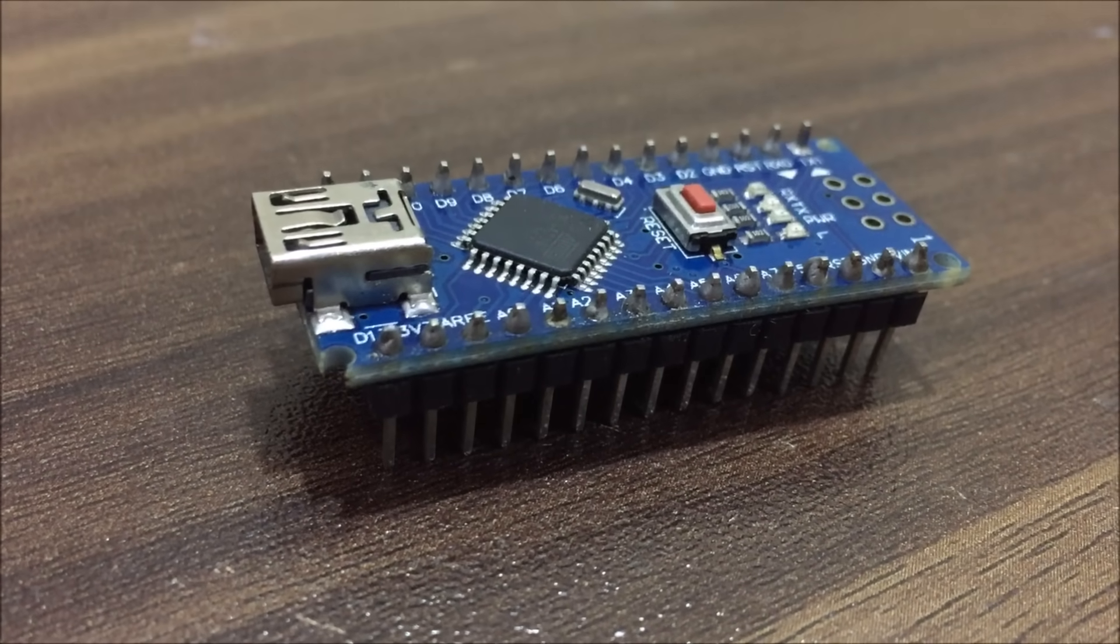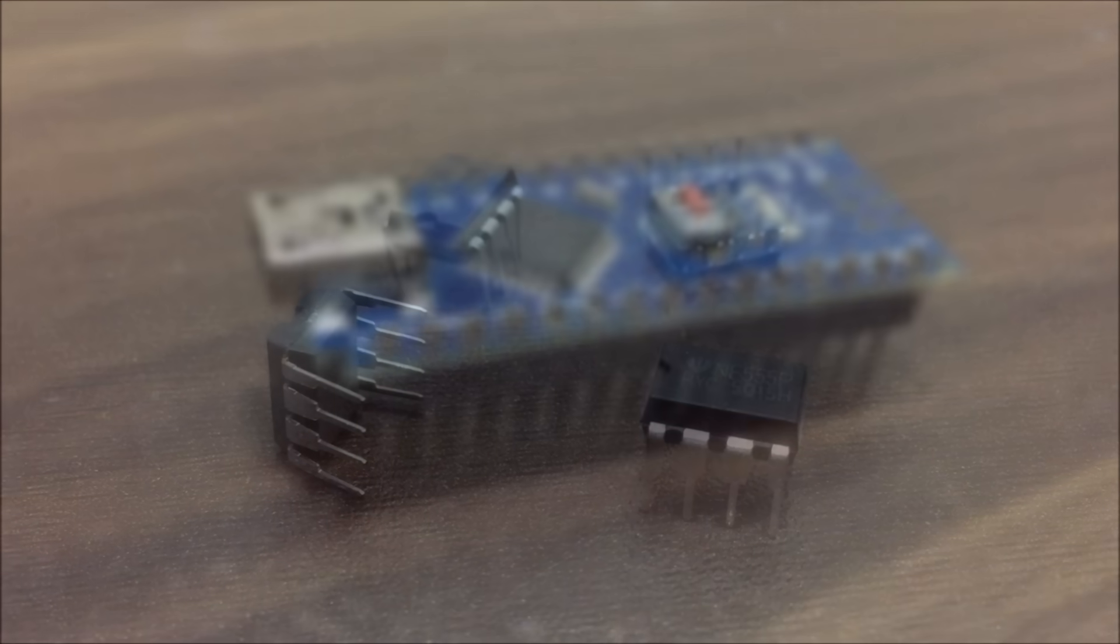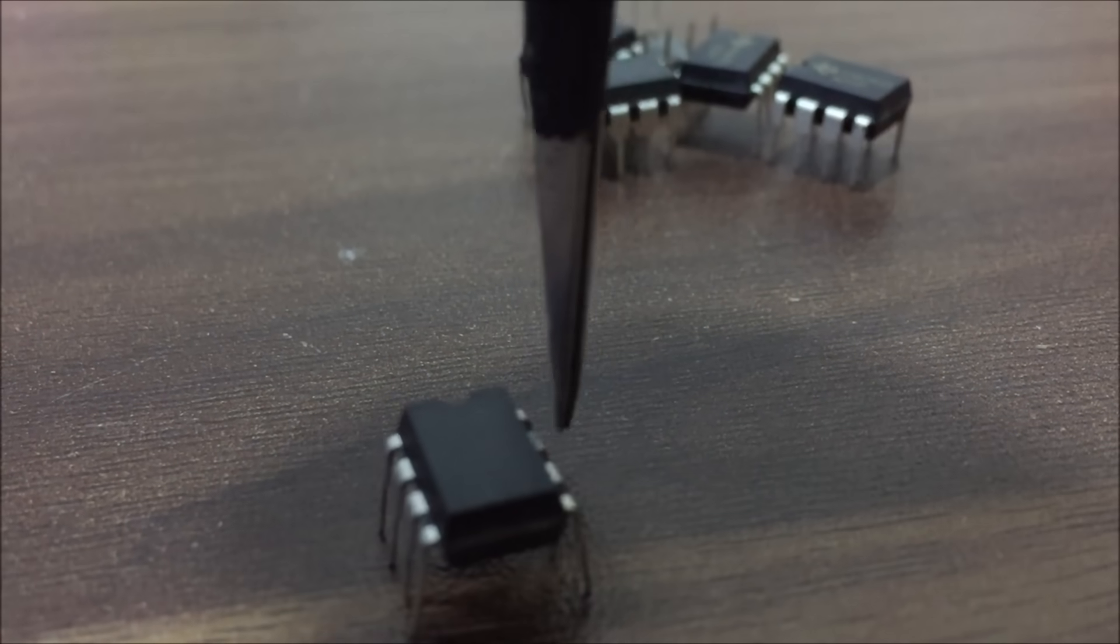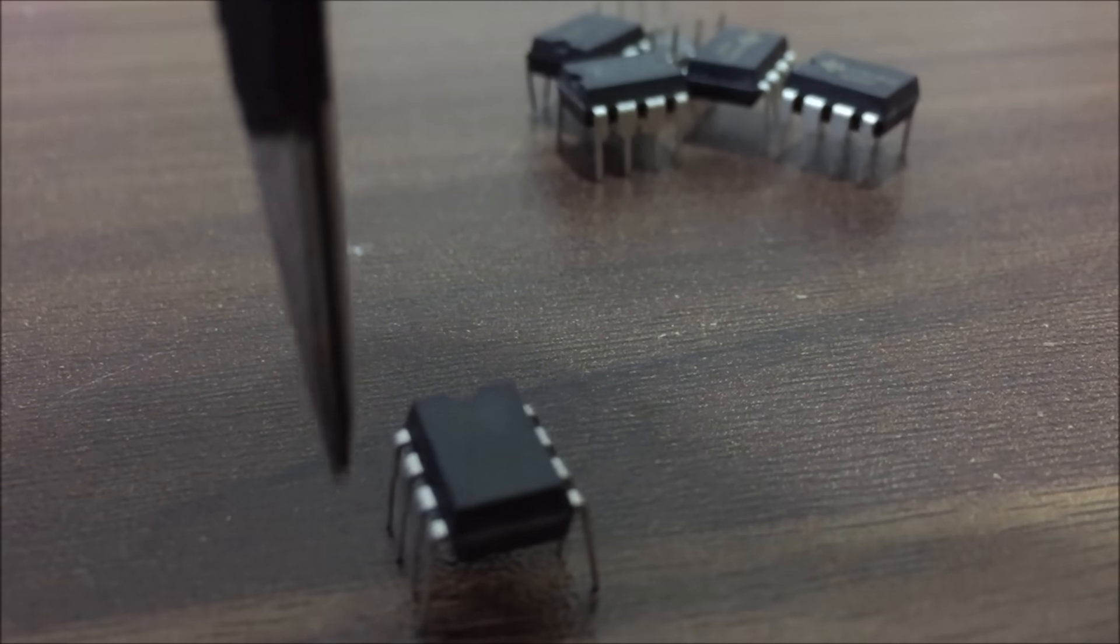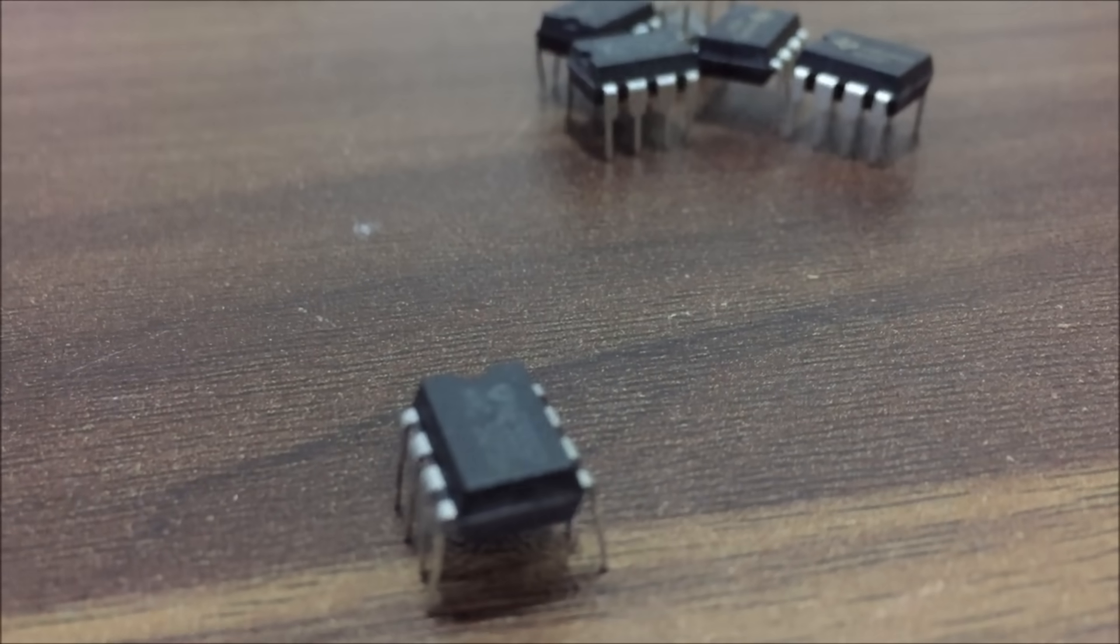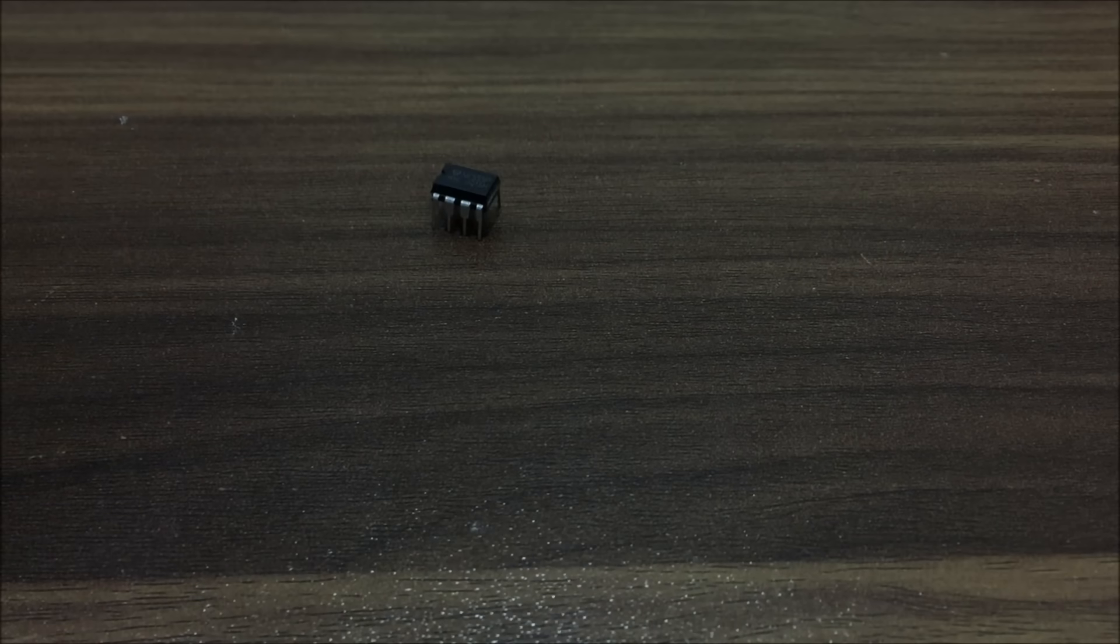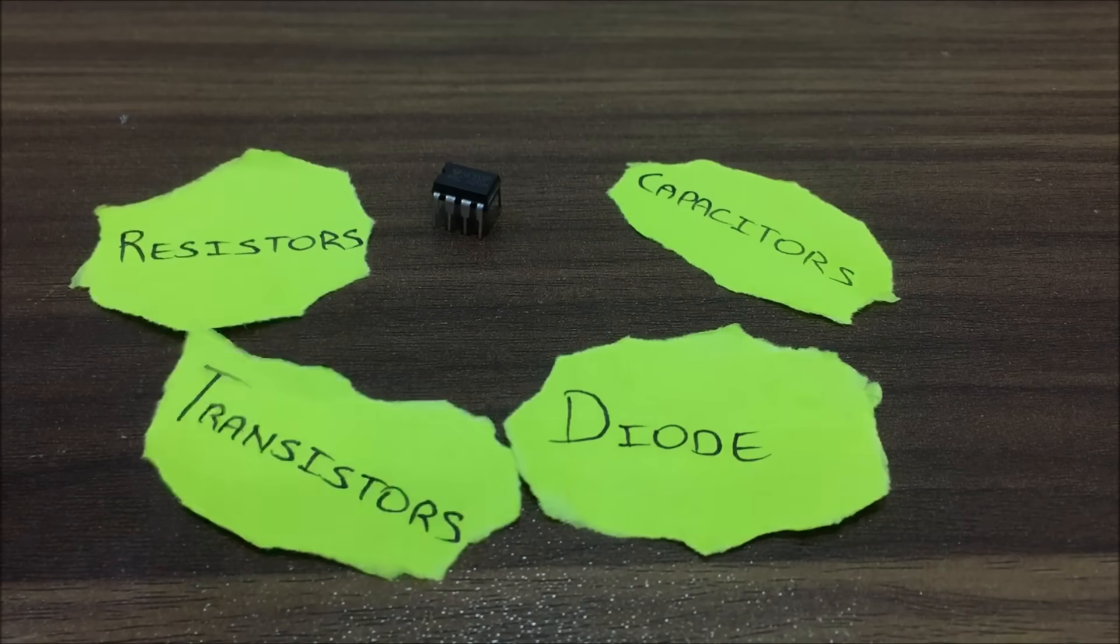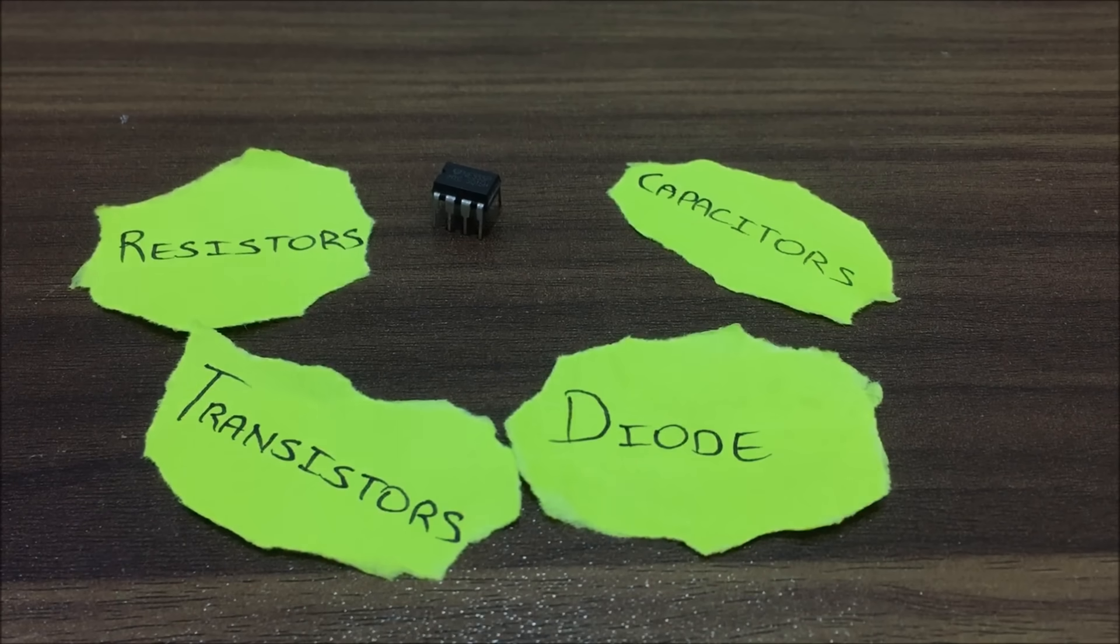The second type of IC is a rectangular IC like this grandfather of all ICs, the 555 timer. You see it has pins on only two sides, that's why it is called rectangular IC. So have a look at this. If I would ask you how many electronic components like resistors, capacitors, diodes, and transistors are there in this IC, then it would be impossible for you to guess the amount.